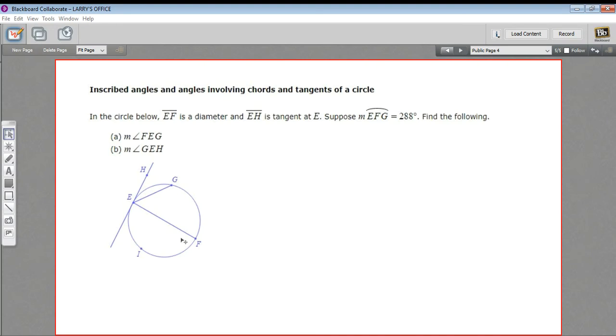Here we have a problem with some inscribed angles and a chord and a tangent to a circle. We've got some arc lengths given to us, and we've got to figure out some measures of angles. I think it's best to take this a step at a time and just add whatever information we're given or can figure out as we go.